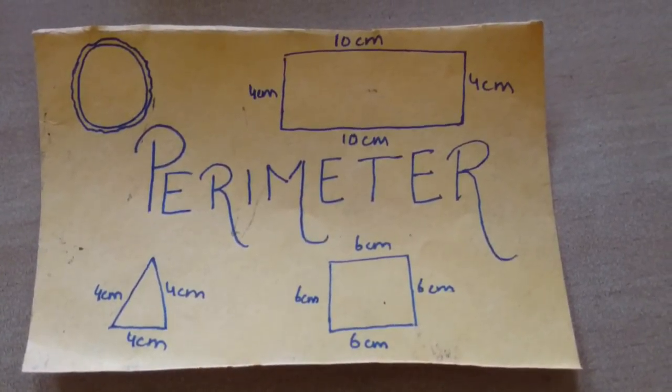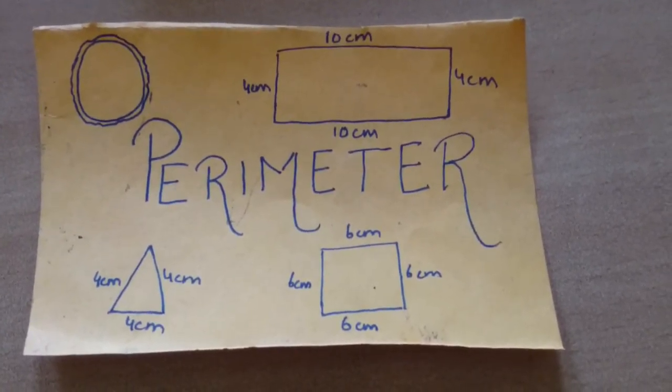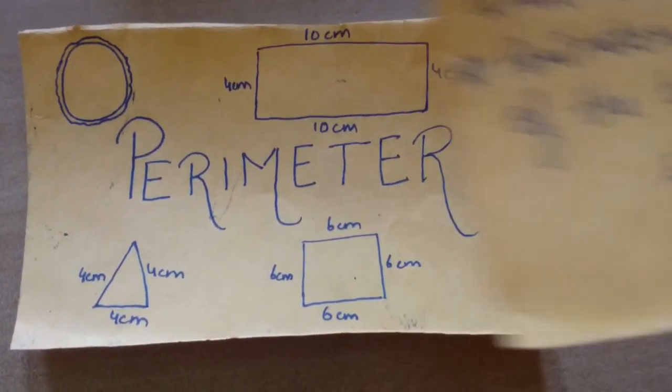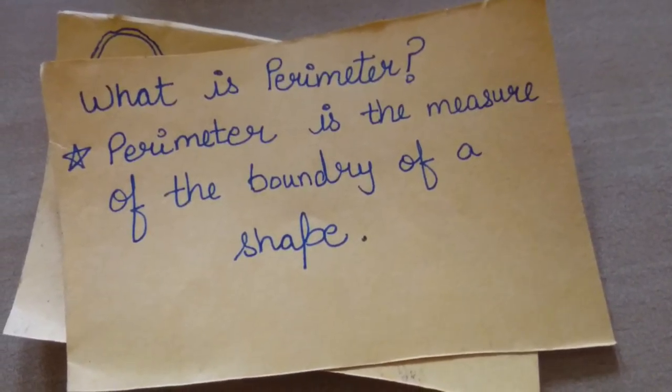Today I am going to explain the concept known as perimeter. The first question which arises from this concept is, what is perimeter? Perimeter is the measure of the boundary of a shape.